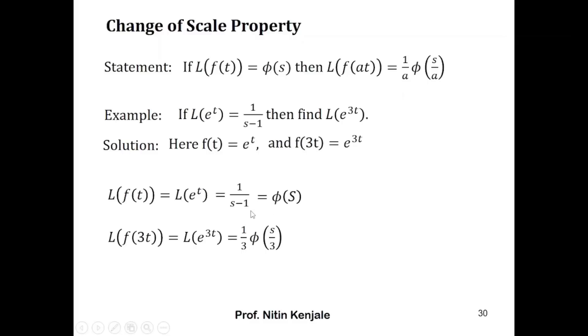φ(s) is 1 by s minus 1, so to calculate φ(s/3) from φ(s), we will replace every s in this φ(s) by s/3. So we have 1 by 3 into 1 by (s/3 minus 1). Simplifying this we have 1 by s minus 3, which is the correct answer for Laplace of e raised to 3t.